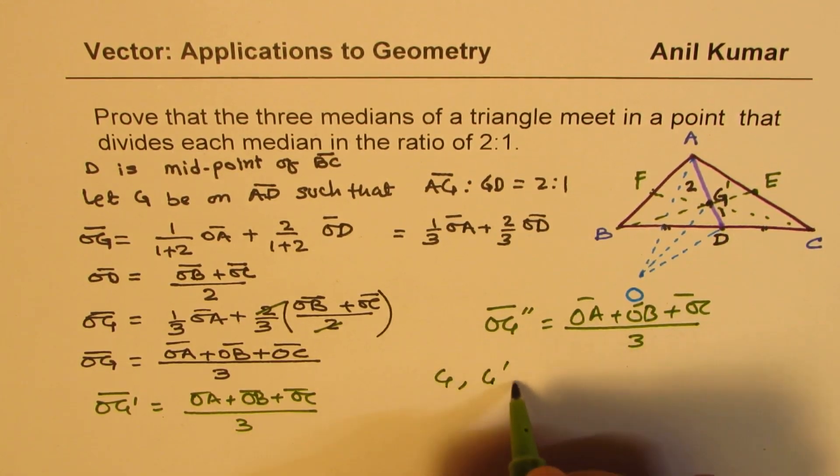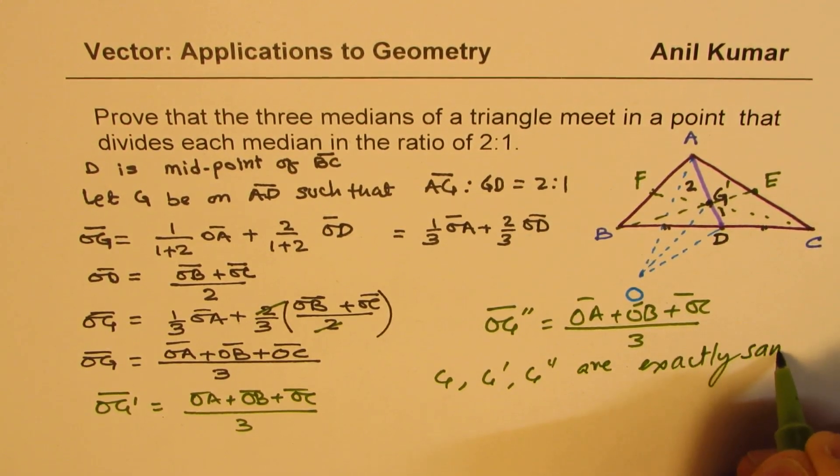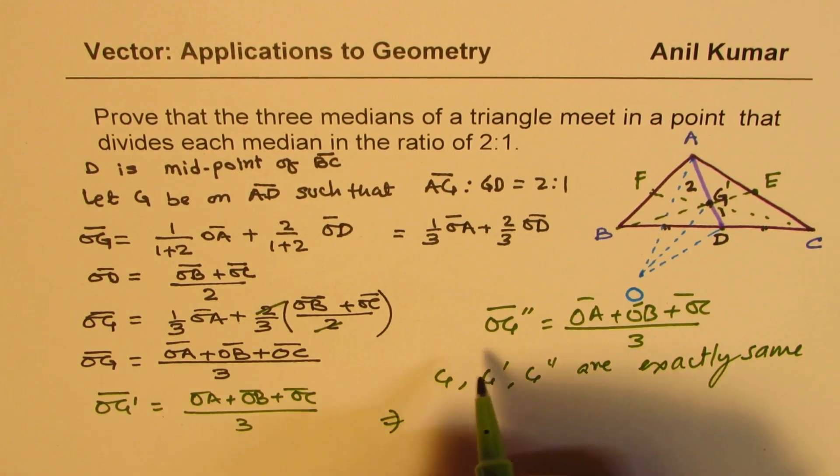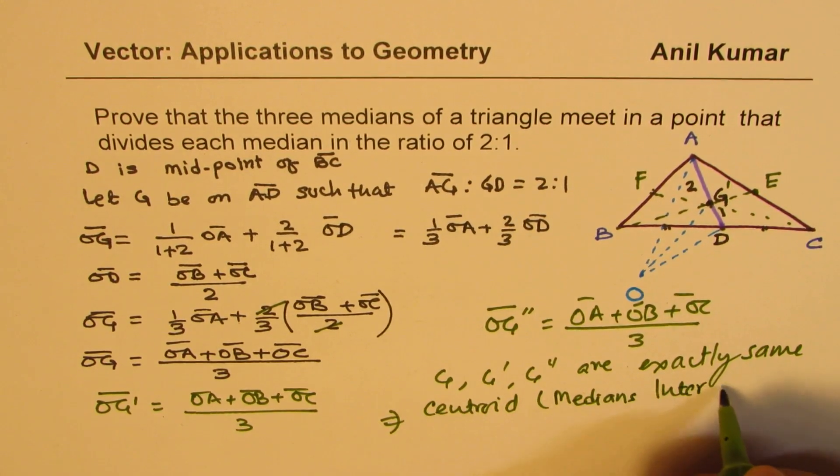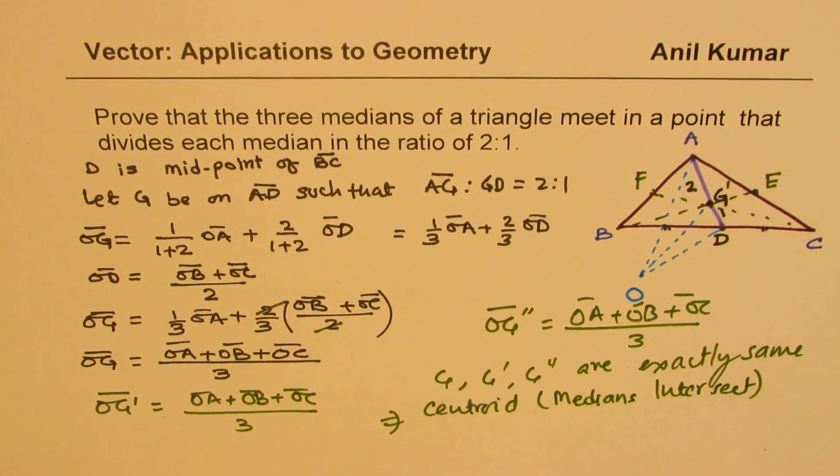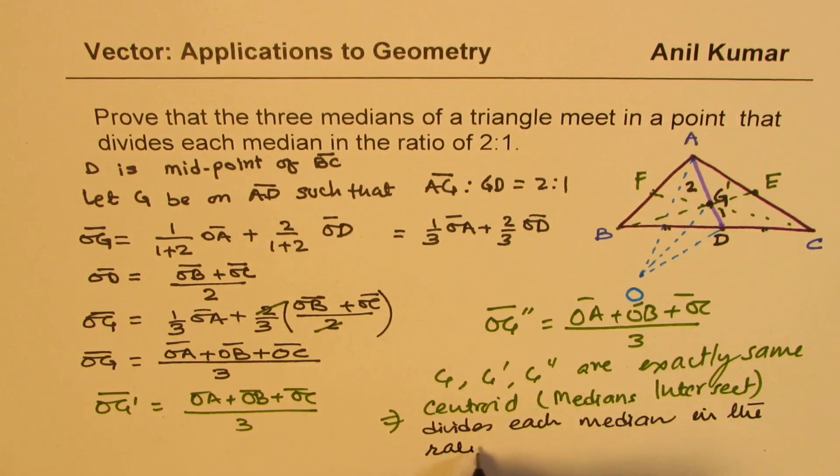That means G, G', and G'' are exactly the same. So therefore, we can see that the centroid - centroid is a point where the medians intersect - centroid.